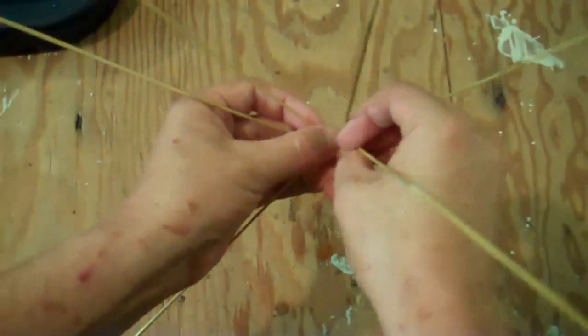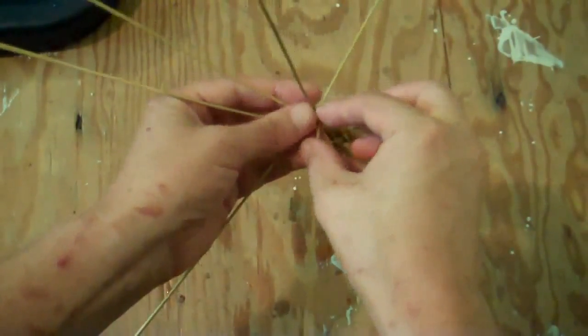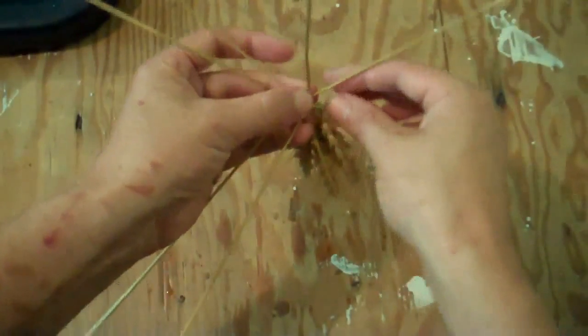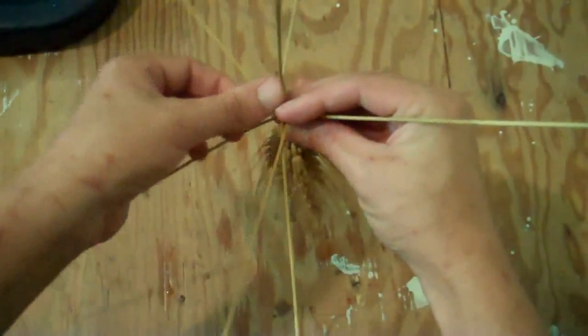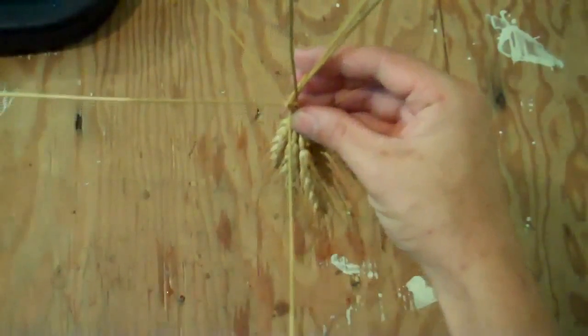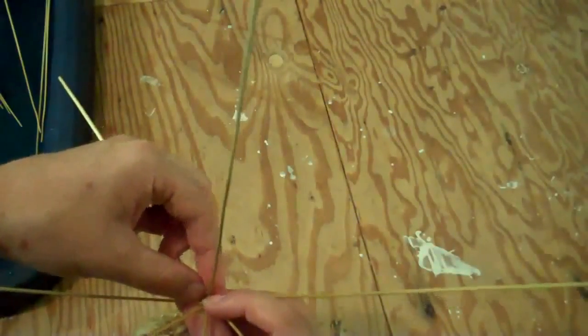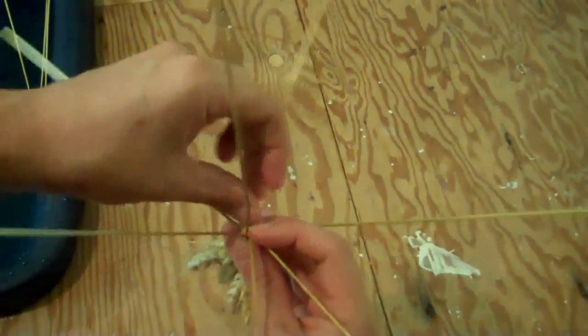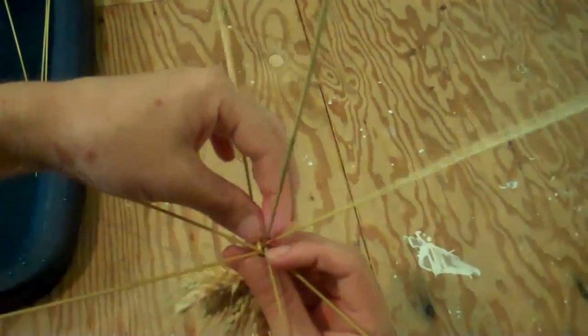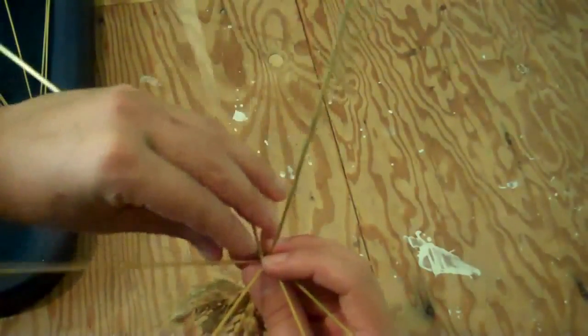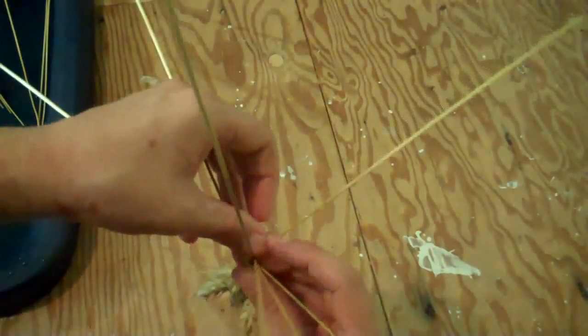Do the same thing again, taking the straw to the right of the one you just bent, bending it over the two next to it so it fills the new gap. Then you'll just keep going around, bending each straw over the two next to it and fill in all the gaps. You'll just keep going around like that.